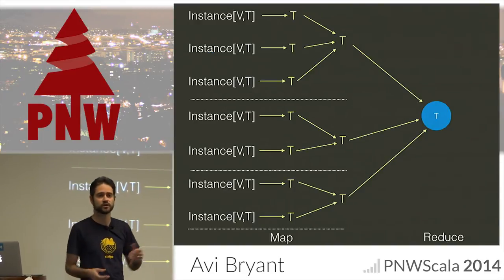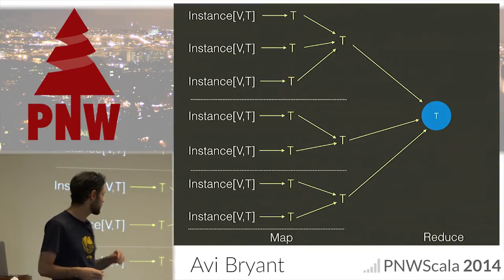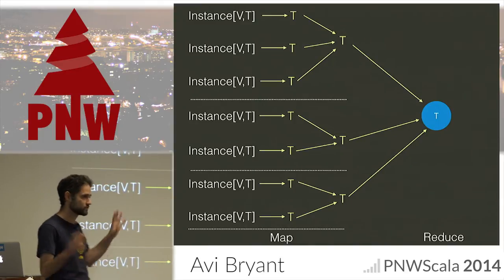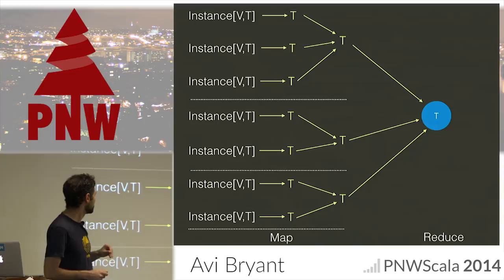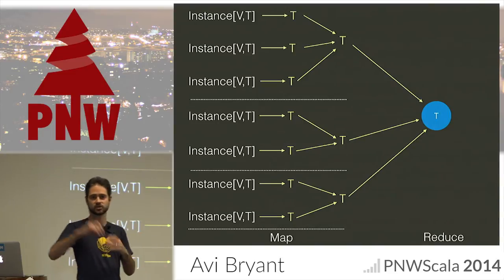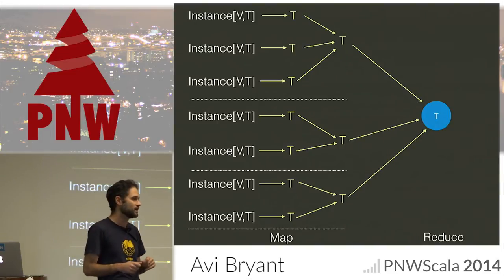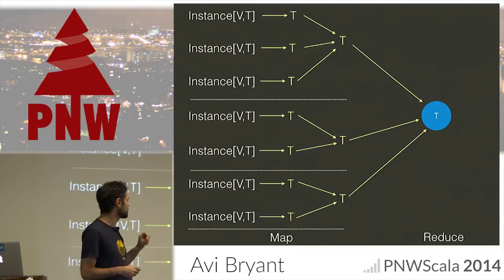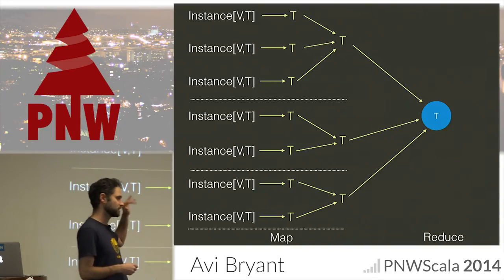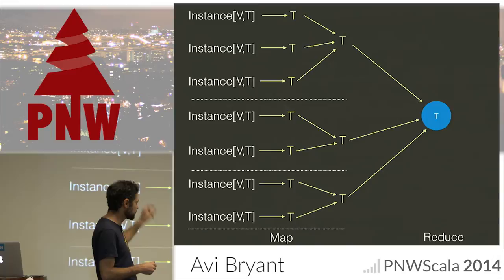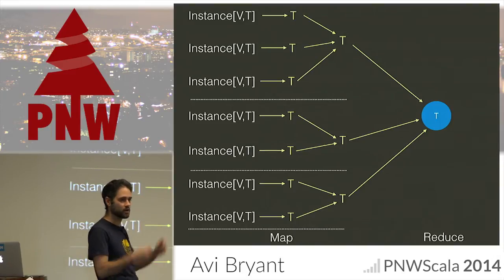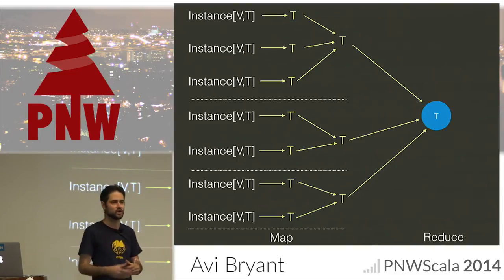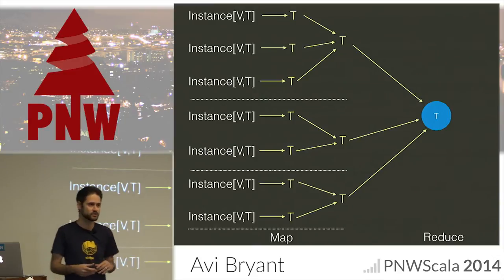In the MapReduce context, that looks like this: we have a number of instances, each on a different node of the cluster. From each of them we extract this T — this distribution — and locally on each node we sum them up to get a single subtotal. Then in the shuffle and reduce step we send each subtotal to a single reducer, add them all up, and now we have our root node. Not super exciting, not a very useful thing to predict with yet, but a necessary starting point.